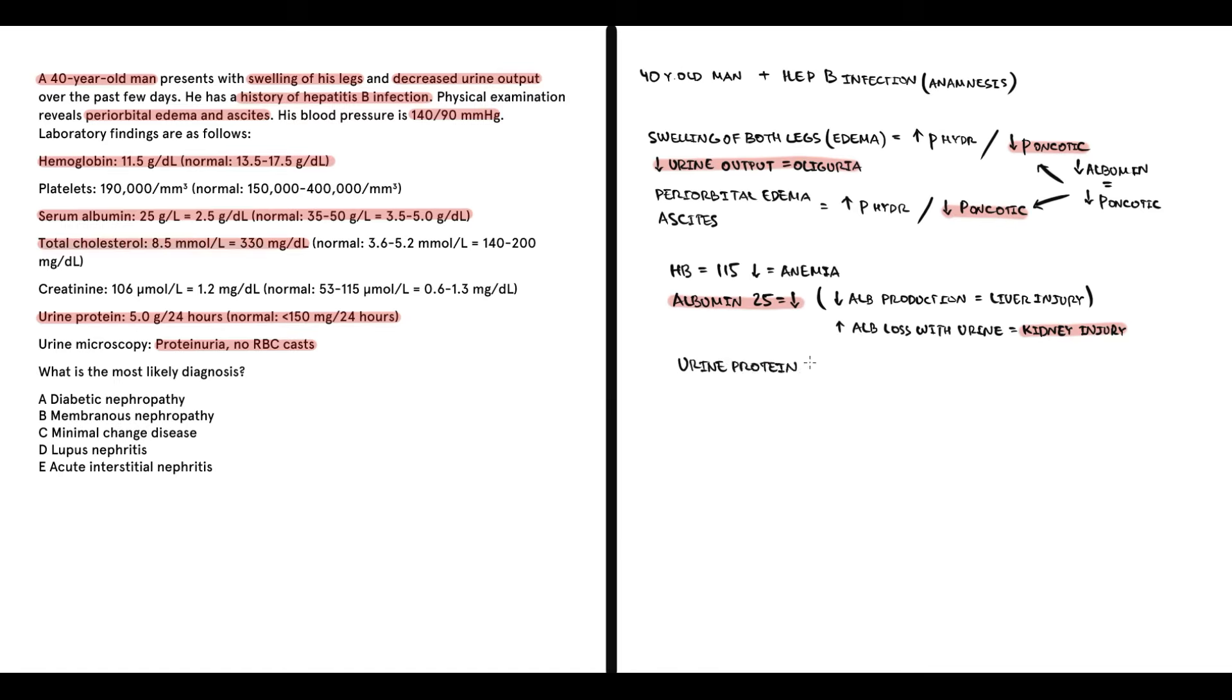His urine protein excretion is 5g per day, which is huge. And we know that everything higher than 3.5g of protein per day is classified as nephrotic syndrome. Important that he does not have red blood cells in the urine. So nephritic syndrome is absent. So this patient has kidney injury with nephrotic syndrome.